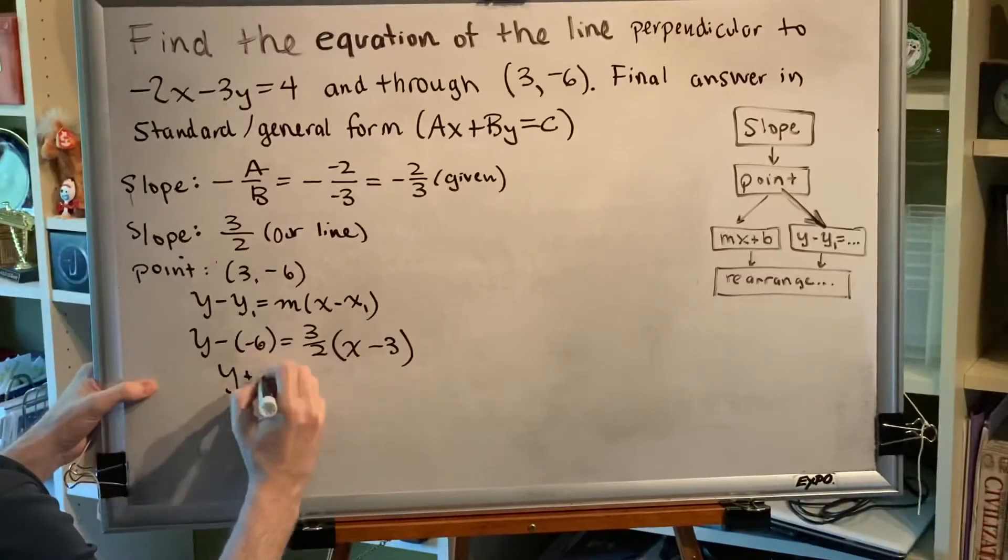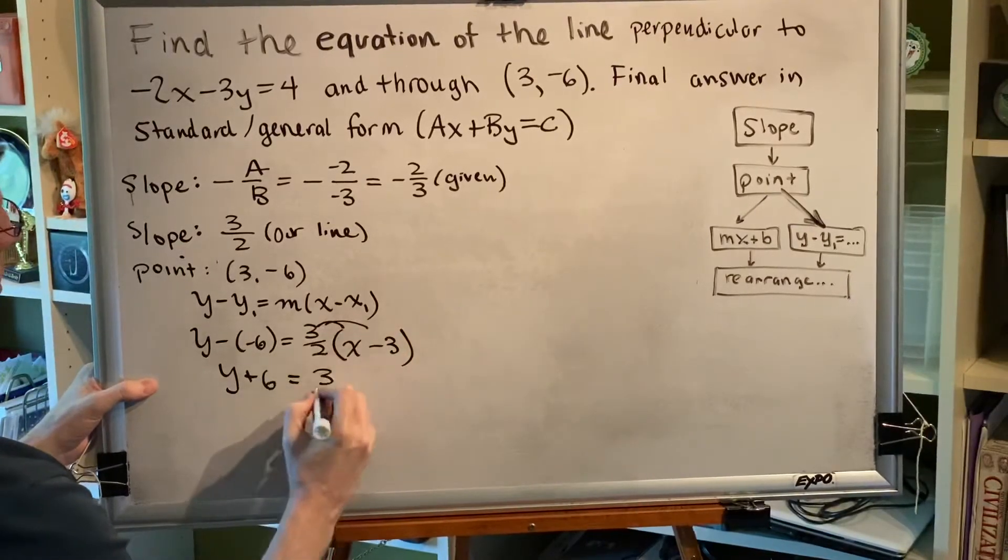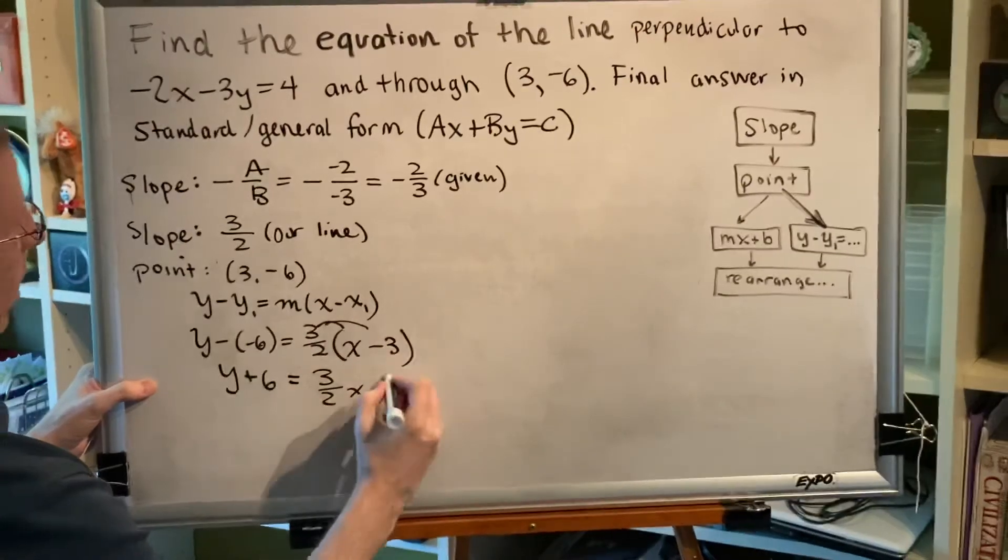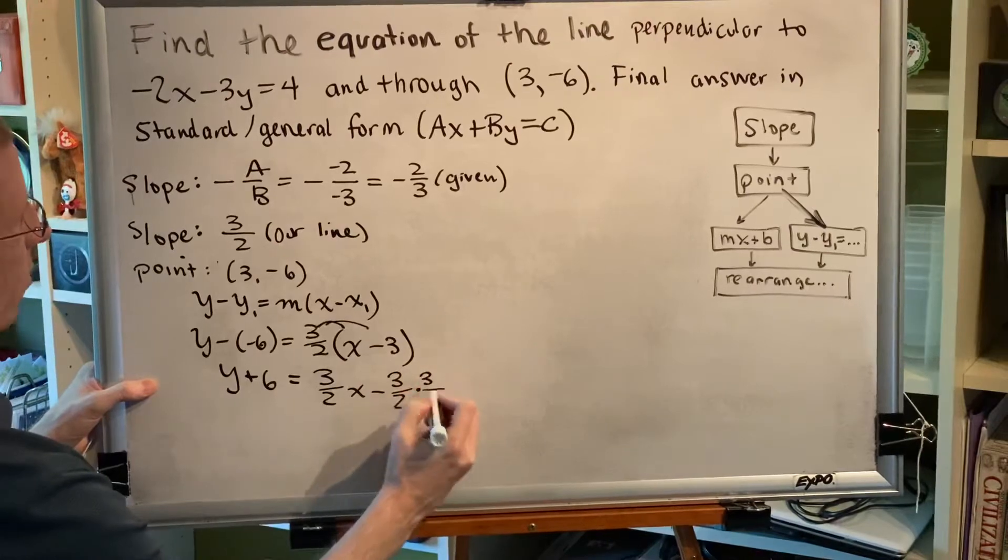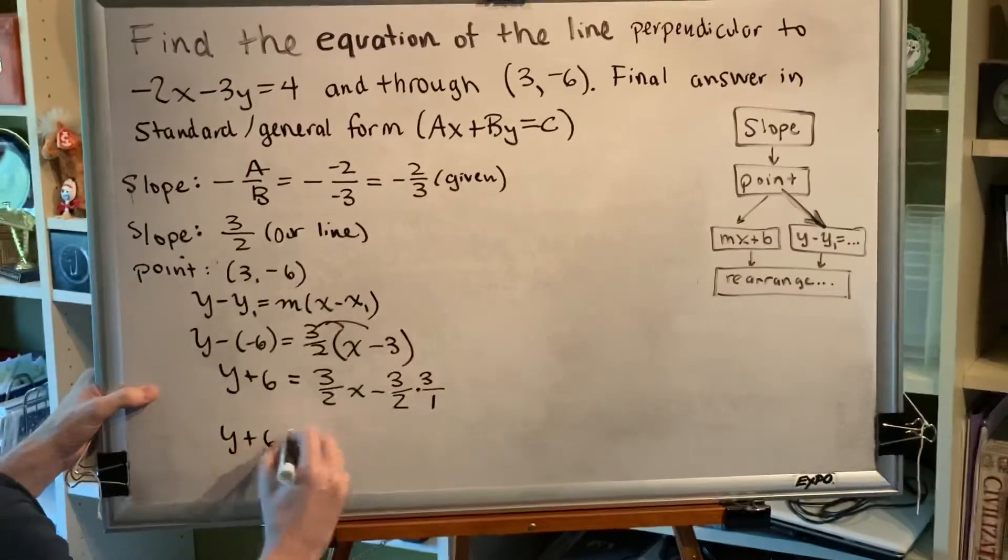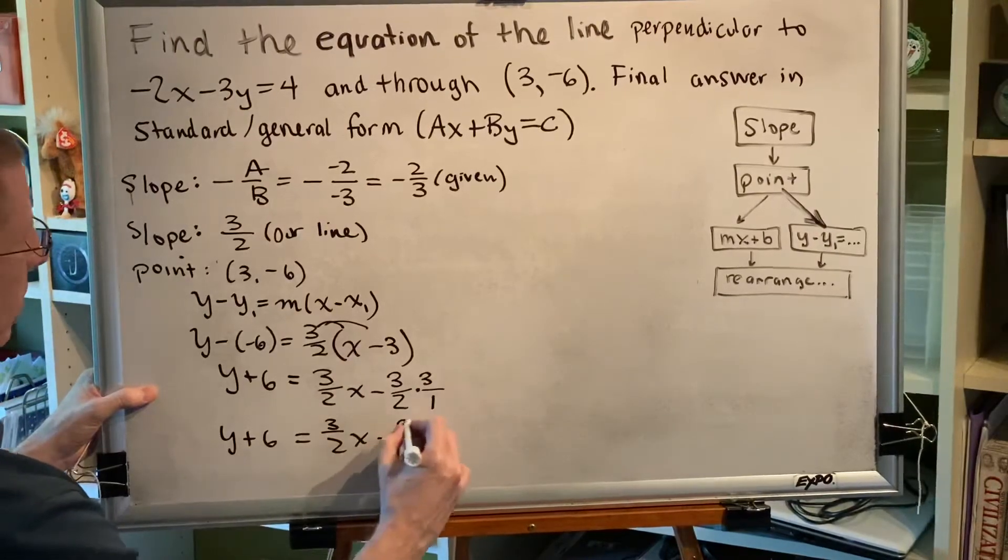Subtracting a negative is the same as adding. Distributing the 3/2 gives us 3/2x minus 3/2 times 3. 3 can be written as 3/1 so I get y + 6 = 3/2x - 9/2.